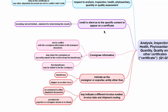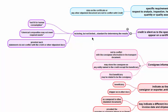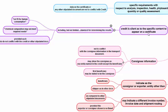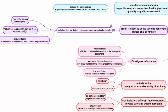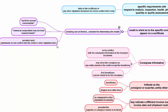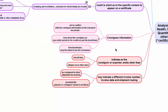If the credit is silent as to the specific content to appear on the certificate — for example, if purchasing coal or crude oil and the credit does not specify the calorific value — then phrases such as 'not fit for human consumption' or 'chemical composition may not meet the required needs' are acceptable, provided such statements do not conflict with the credit or other stipulated documents. If the credit or other documents give any clue as to the required content, these exceptions will not apply. Otherwise, banks may accept such certificates even with adverse-sounding statements.